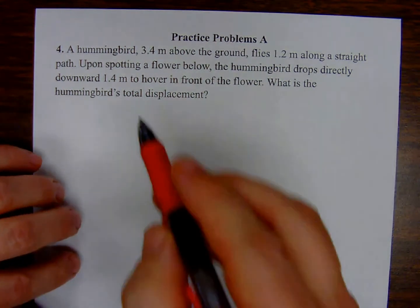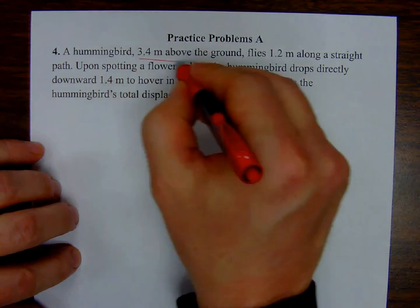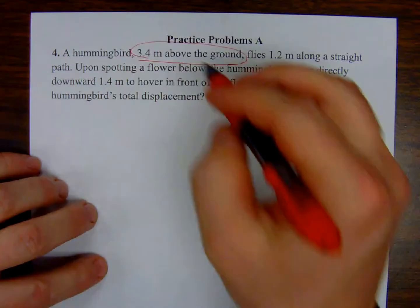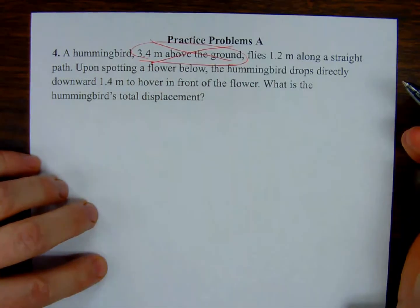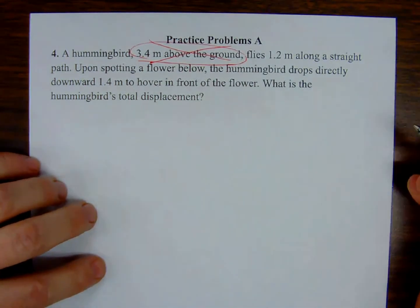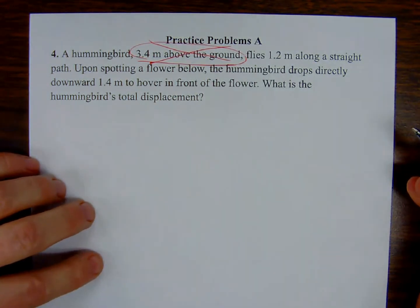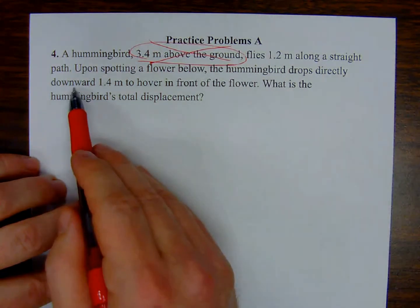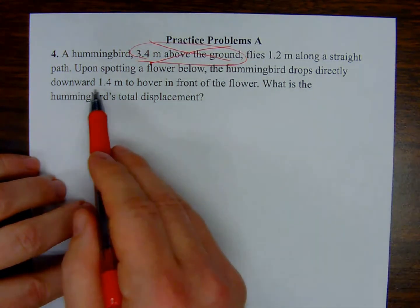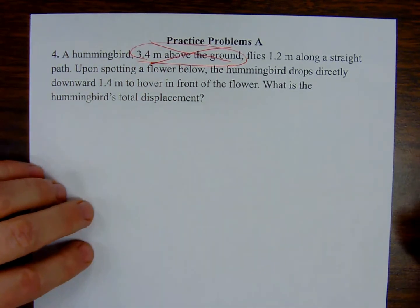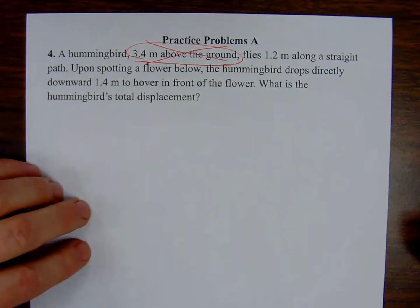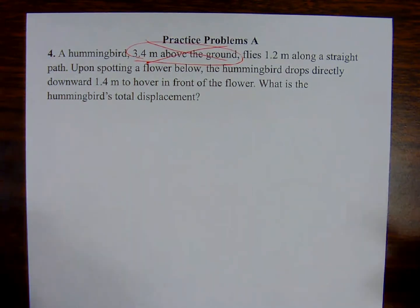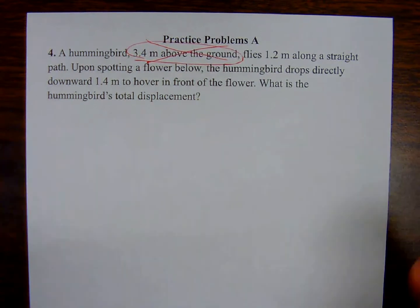I'd like to point out that this information right here, the 3.4 meters above ground, is not actually useful. I guess in concept it establishes the fact that the hummingbird actually has room to descend, which is what the hummingbird does - it drops directly downward. If you wanted to be a critic of the problem, establishing that the hummingbird is actually above the ground gives you the ability to move down. But in terms of the math, we're not going to use that 3.4 at all.